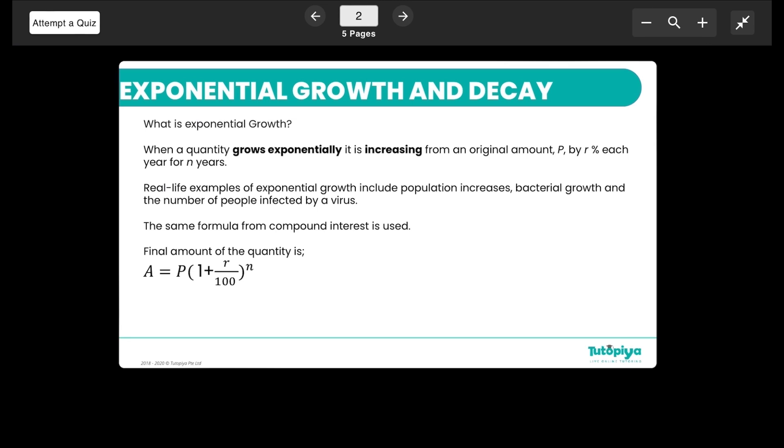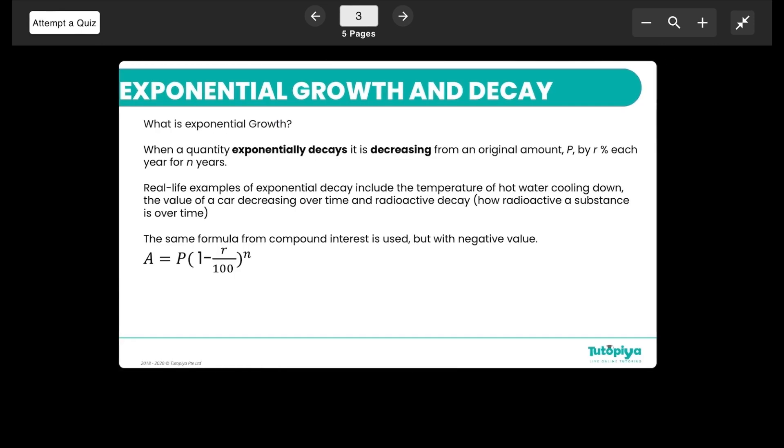That's basically how exponential growth works and we usually use the same formula for compound interest. This is the formula that we use: the final amount is basically the principal amount times a particular ratio percentage that we are investing to the power of the number of years.